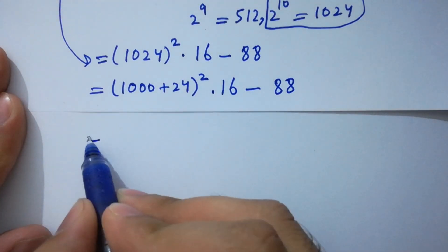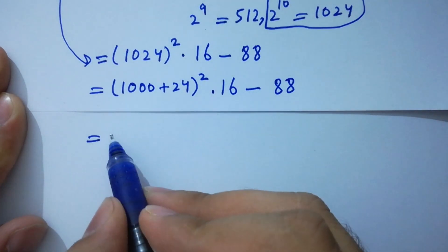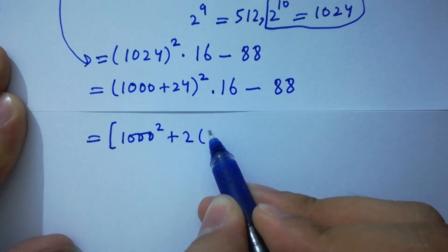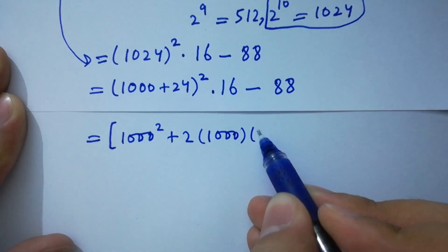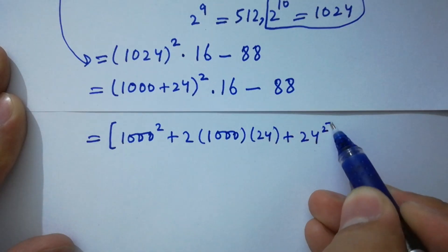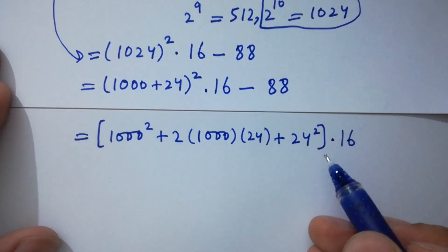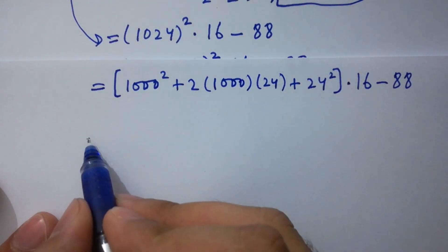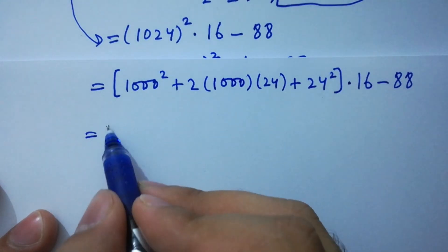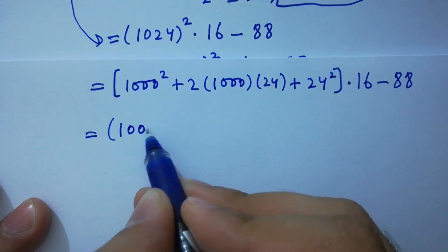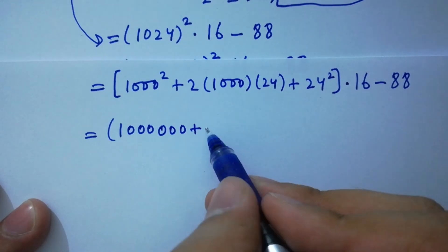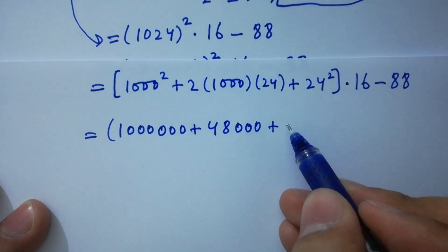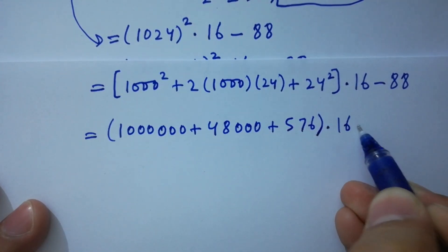The formula (a + b)^2 equals a squared plus 2ab plus b squared gives us: 1000 squared plus 2 times 1000 times 24 plus 24 squared, all times 16, minus 88. This simplifies to 1,000,000 plus 48,000 plus 576, times 16, minus 88.